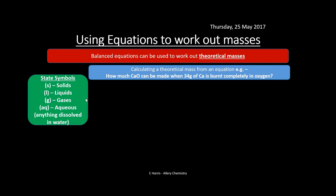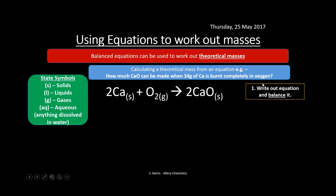Balanced equations can be used to work out a theoretical mass. For example: how much calcium oxide can be made when 34 grams of calcium is burnt completely in oxygen? First, write and balance the equation — this method is also useful for calculating percentage yield, where the theoretical mass is required.